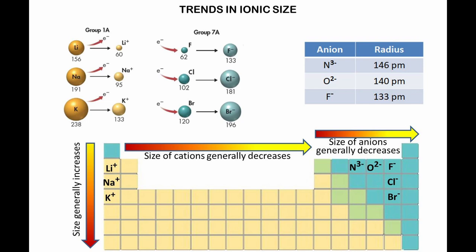Second, anions. When an atom gains an electron, the attraction between the nucleus for any one electron decreases. So the anions are larger than the atoms from which they form. Let's compare the size of the anions for nitrogen, oxygen, and fluorine, which are elements from period 2. We notice that the size of the anions decreases when we move from left to right across a period.